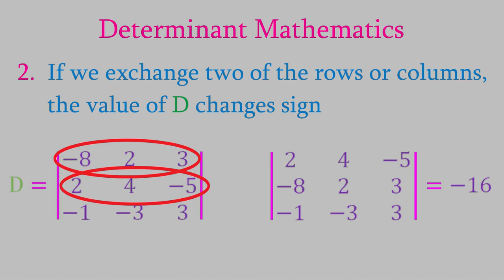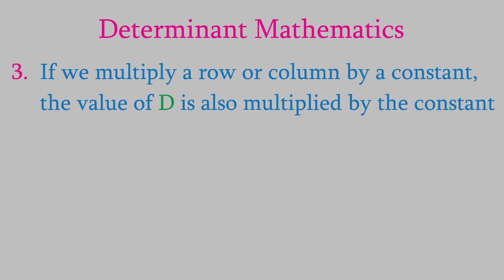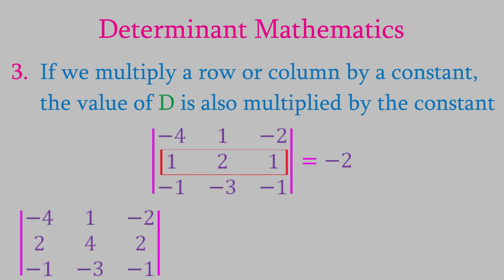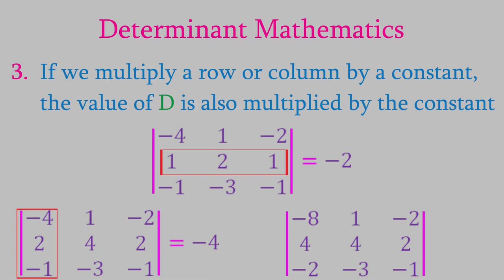The third rule says that if all the elements of a row or column are multiplied by a constant, the value of the determinant is also multiplied by that constant. For example, this determinant is equal to negative 2. If the second row is multiplied by 2, the new determinant equals negative 4. If we then multiply the first column by 2, we get a determinant equal to negative 8.